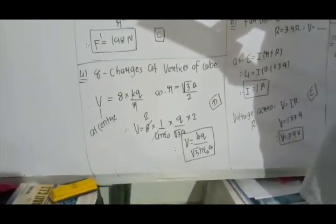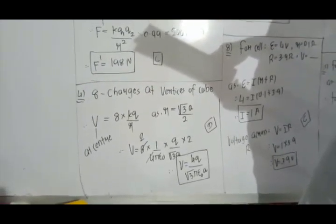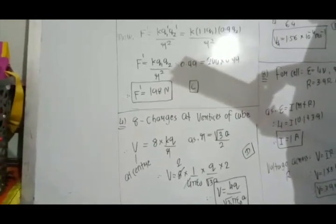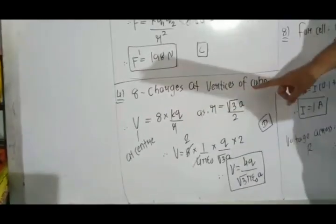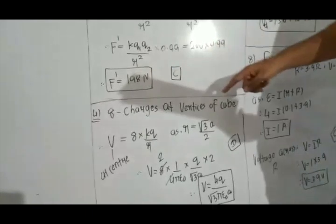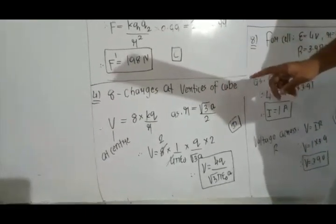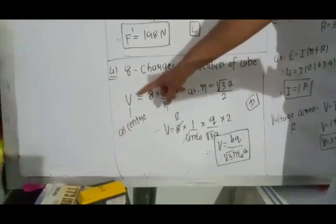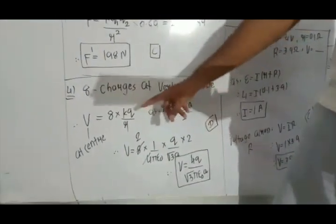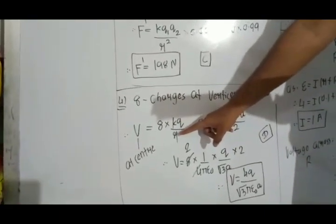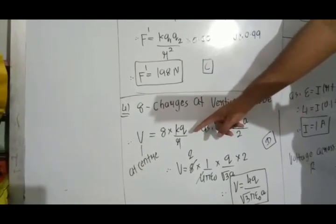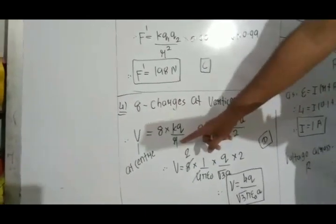Question number 4. It is given that 8 charges, each of magnitude Q, are placed at the vertices of a cube in a vacuum. Find the electric potential at the center of the cube. The total potential V = 8 × (K·Q/R), where R is the distance from a vertex to the center.